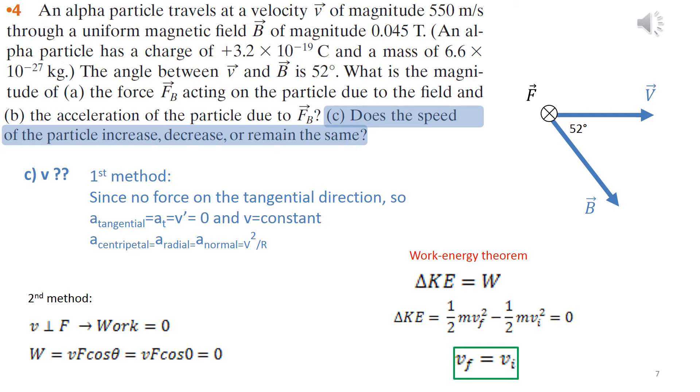One of you asked if V is constant, how come we have an acceleration, a centripetal acceleration? Actually, remember that A centripetal is V squared over R. It's not about the change of V. It's about change of direction of V. Now, the second method is, if you think about it, since V and F are perpendicular, so the work is equal to zero, and V final is equal to V zero, because the work energy theorem says that the work of all the forces, work total, is equal to the change in kinetic energy. So since the work total is zero, delta Ke is zero, and V final is equal to the initial.